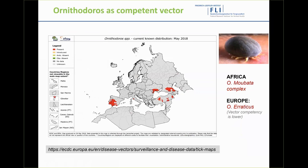Ornithodorus is the genus of soft tick involved. Although it plays a very high role in perpetuating the problem in Africa, it has only been found in parts of Asia and Europe. In the United States, there are some soft ticks in the western part of the country, but it is unknown whether or not they can carry the African Swine Fever virus.